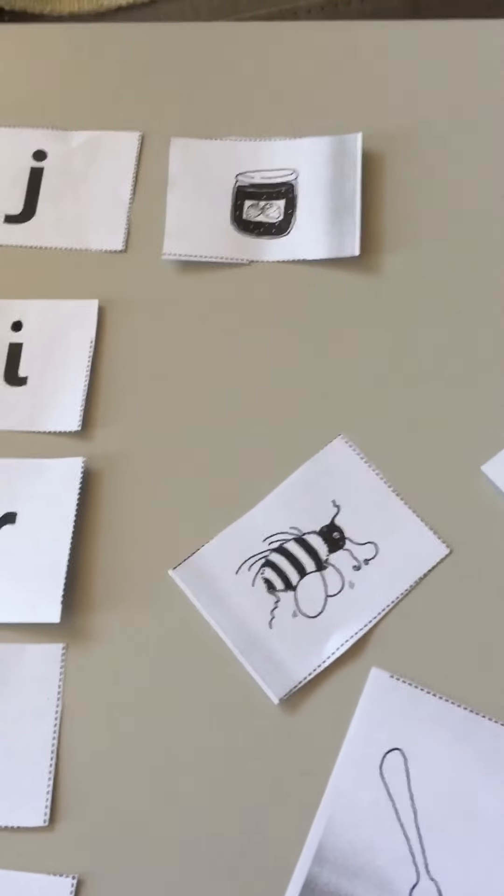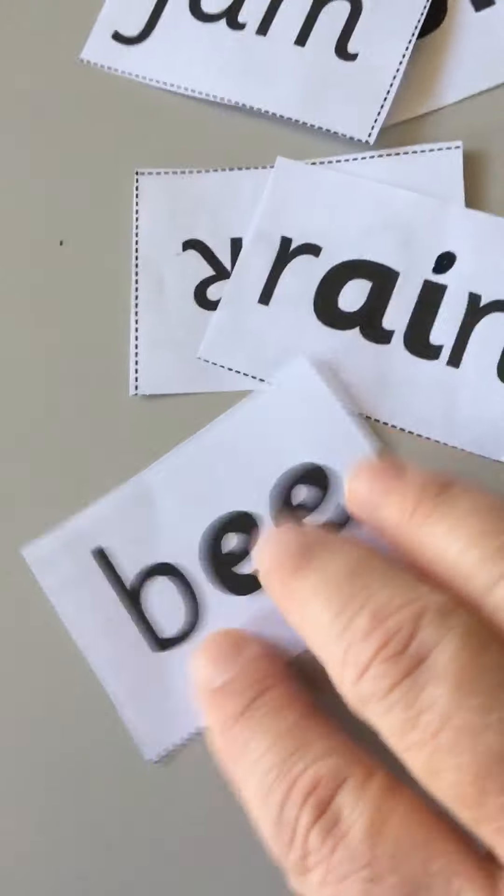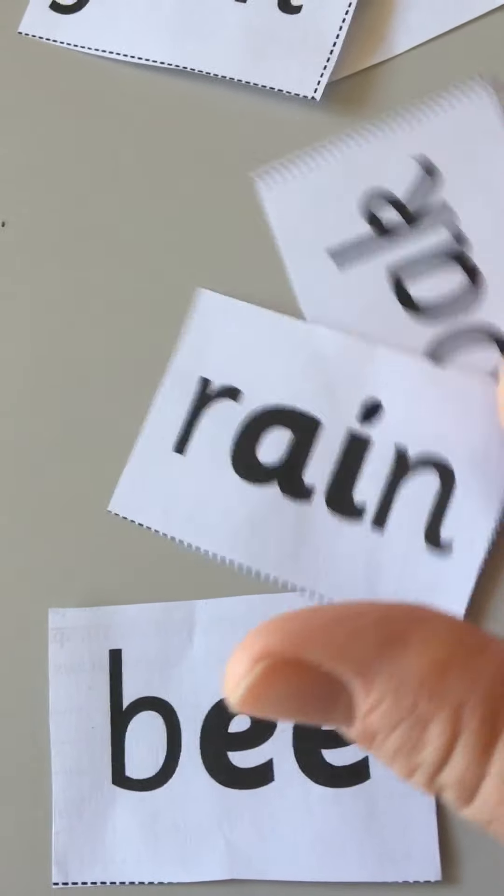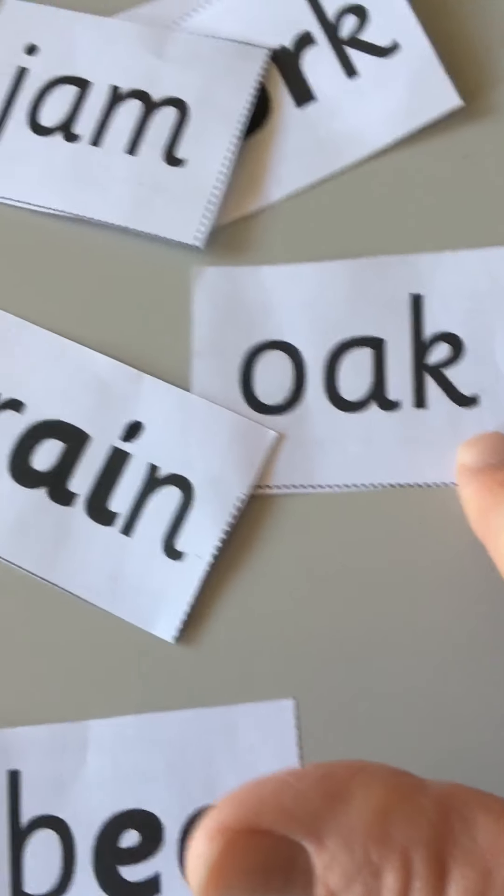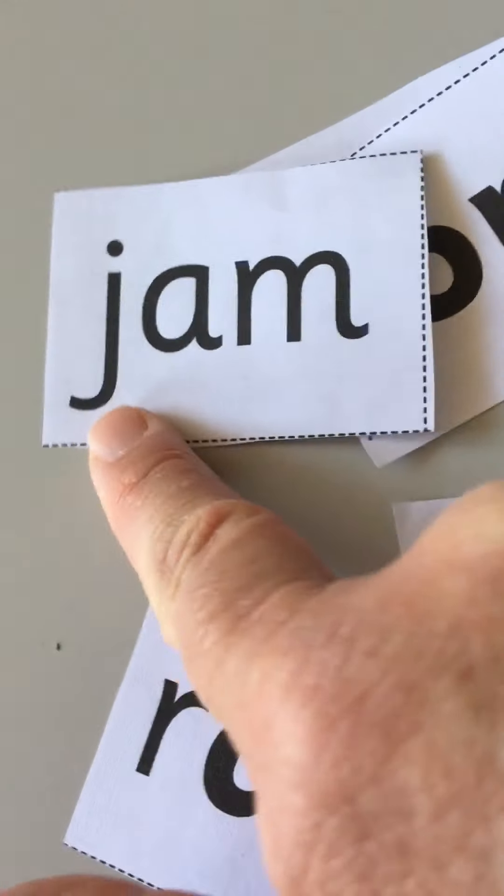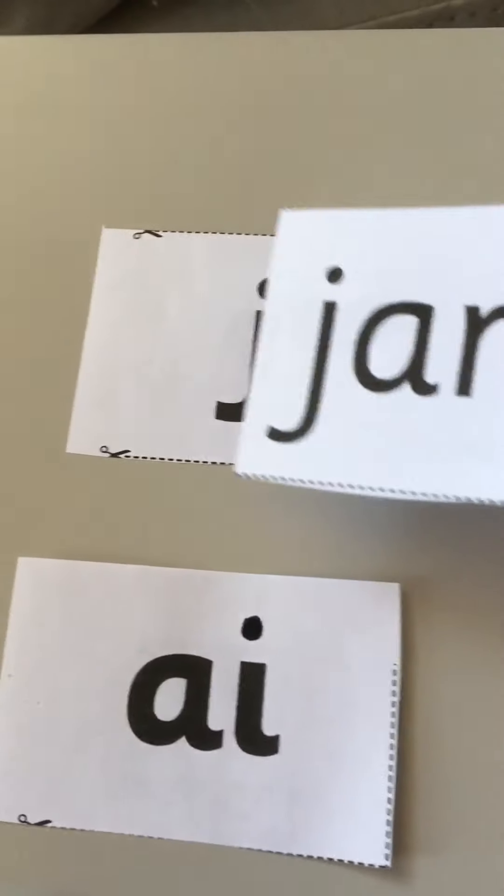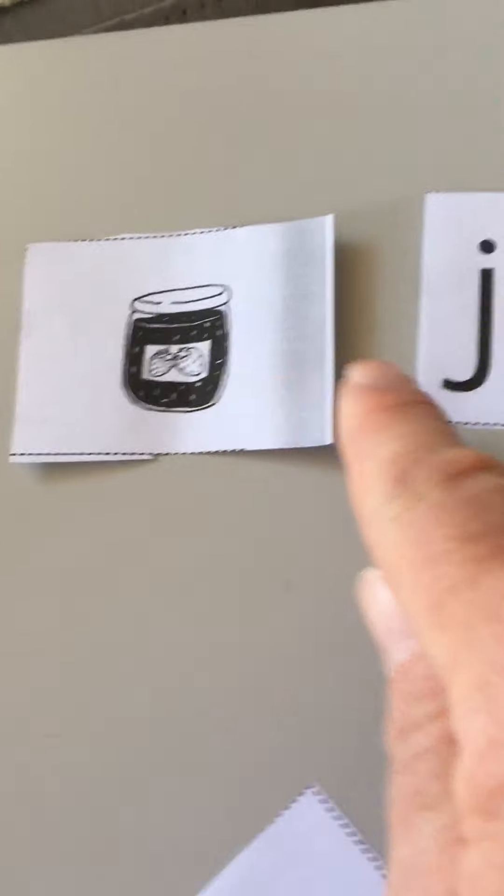Now let's go and find the word jam. This is P, E, R, A, N, O, K, A, J. Let's remake it. J-A-M, jam, and J-A-M, jam. Next.